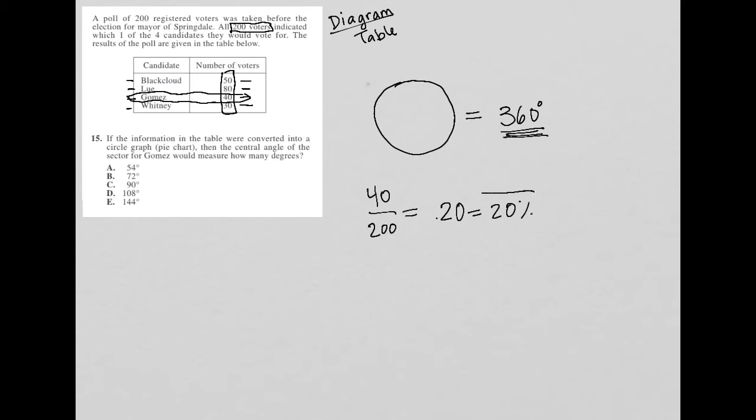So 20% of the total number of votes in this table is expected to go to Gomez, which means in my pie chart, 20% of the 360 degrees should be dedicated to Gomez. So what is 20% of 360 degrees?